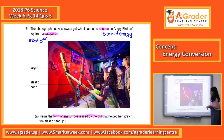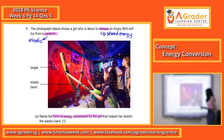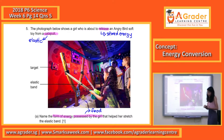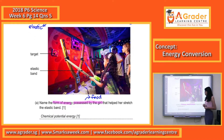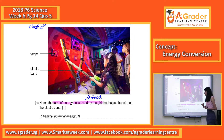They want the energy that is possessed by the girl. The girl has energy and that energy must come from somewhere. We know that energy definitely comes from the food that she eats. We don't call it food energy — food possesses chemical potential energy. So where she gets her energy from is chemical potential energy. Always remember, the form of energy possessed by people that allows them to move or do things is chemical potential energy.